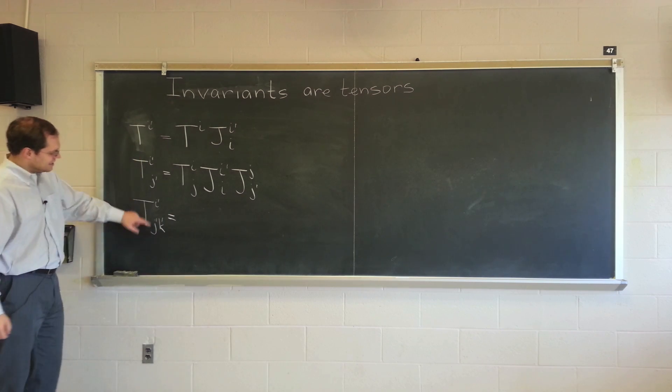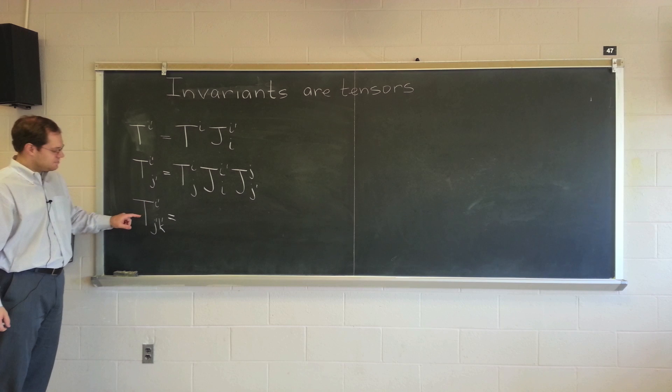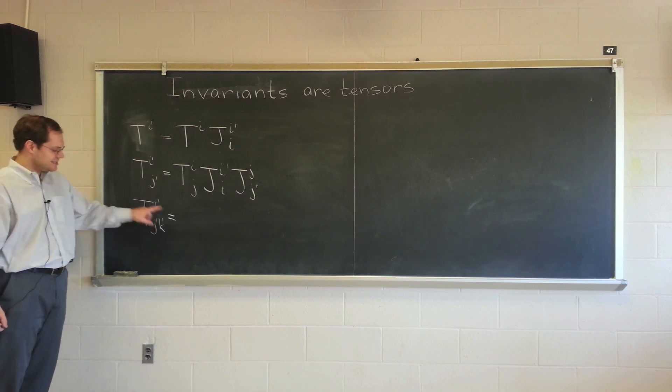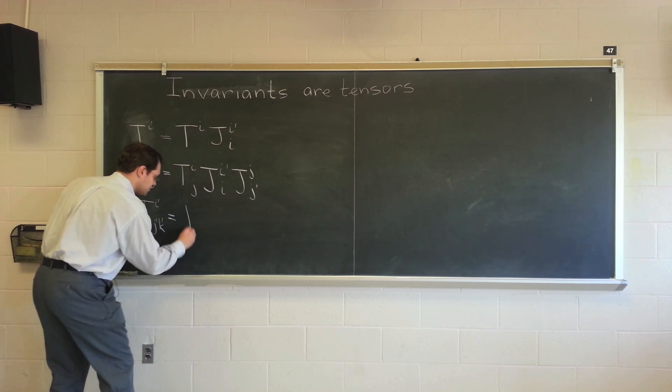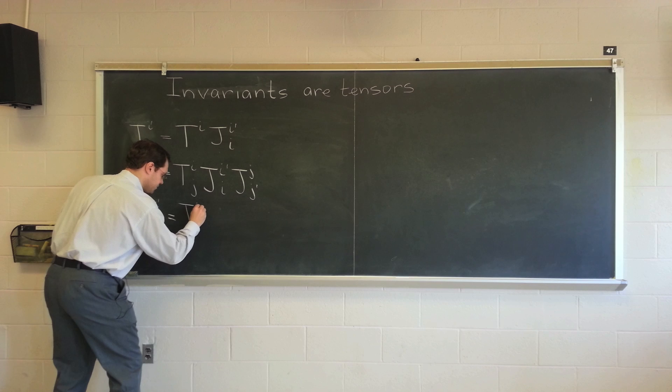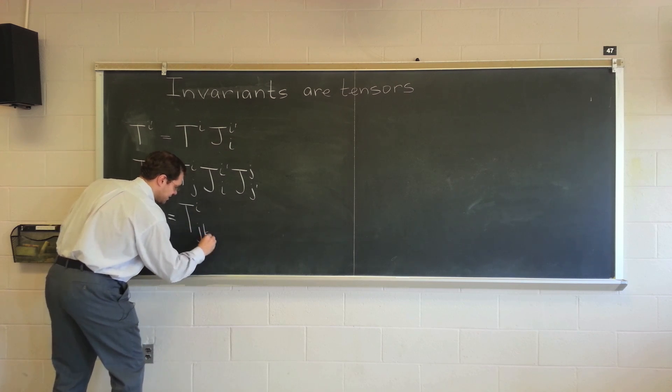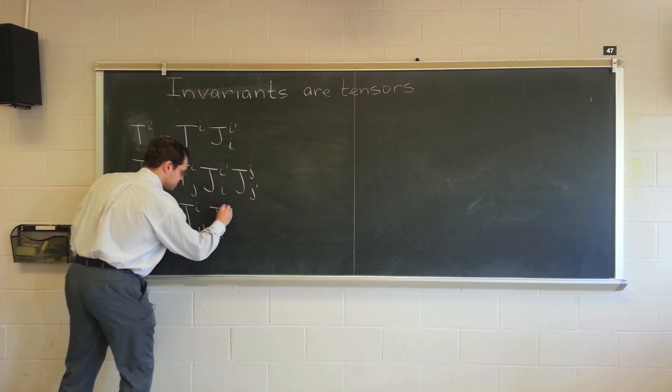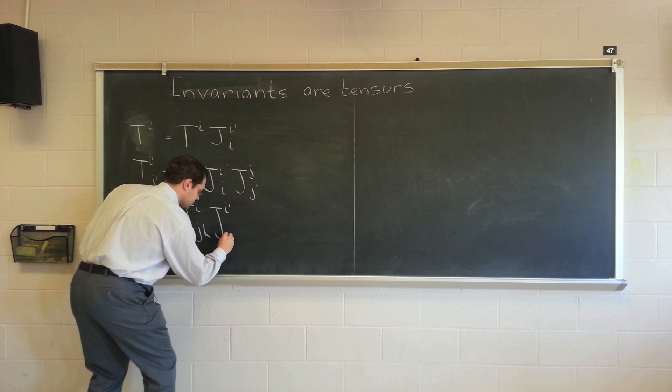Is a tensor, I won't summarize it, but of the kind indicated by its indicial signature, if it transforms according to this rule. Once again, every index gets its own Jacobian.